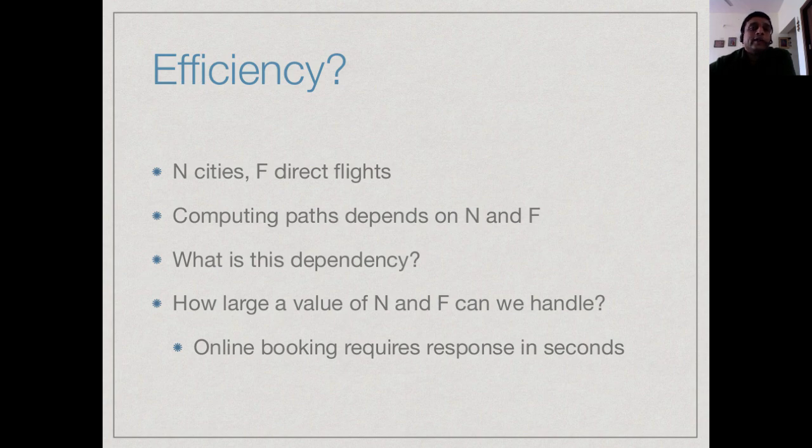The other question related to this is, given this dependency on N and F, what realistic size of networks can we handle? If the airline grows to 20 flights, will we still be able to give our answer in a reasonable time? Remember that this kind of answer is typically required when somebody is making an online booking and you want to reply in a few seconds. It is not enough to come back after an hour and say there is a flight from Trivandrum to Calcutta. So what is the limit of our efficiency? Can we scale this algorithm to cover multiple airlines? That depends on how large a value of N and F we can handle.